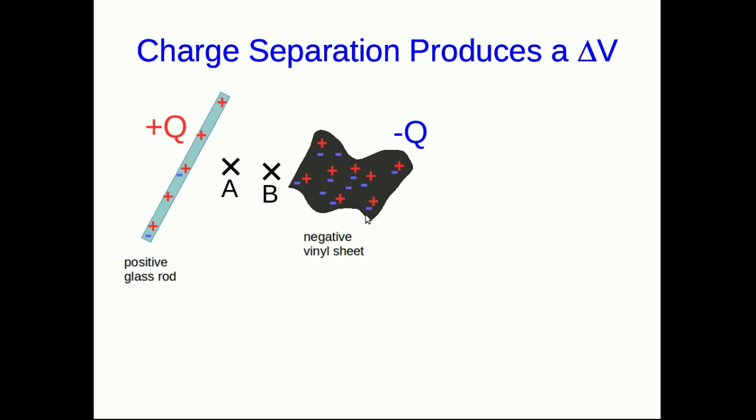And now, don't think so much about the rod and the sheet. We're not really interested in them. They're source charges, and we're thinking of how they affect things around them. So here are two points in space in between them. And think about what happens if you put a positive charge at A. It's going to be repelled from this rod and attracted to this vinyl sheet, and so we know there's an electrical force on it to the right. That tells us the E field is to the right, but I don't want to talk about the E field. I want to talk about the potential.